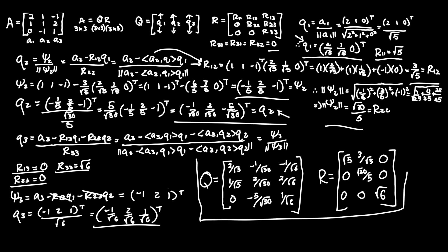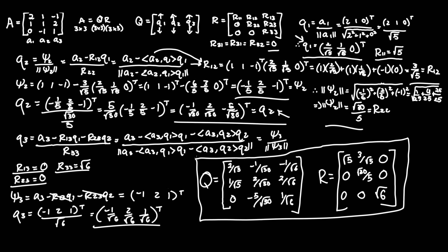And that is matrix A successfully broken down into its Q and R elements. Now we're going to do two more things: first, reconstruct matrix A by multiplying Q and R together to prove our answers correct; and secondly, prove that Q times Q transpose equals a 3x3 identity matrix.